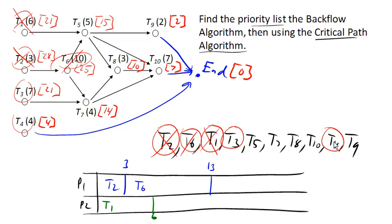so we can go ahead and...oh wait, no, task 3 is ready. Okay, so we can go ahead and assign task 3 here. It's earlier on our priority list. And it has a time of 7, which also takes us out to 13.